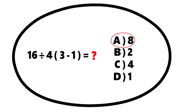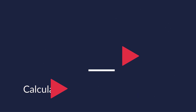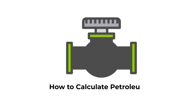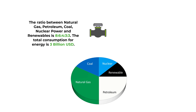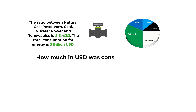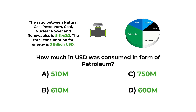A lot of times you might be presented with pie chart questions on the test. In this example, you need to calculate petroleum consumption. The ratio between natural gas, petroleum, coal, nuclear power, and renewables is 8:6:4:3:3. The total energy consumption is 3 billion dollars. How much in US dollars was consumed in the form of petroleum? Choices are: A) 510 million, B) 610 million, C) 750 million, and D) 600 million dollars.